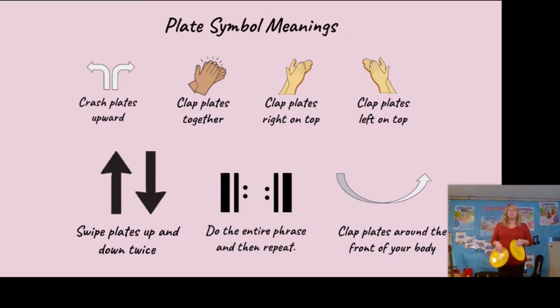Whenever you see two lines and two dots, those are repeat signs. That means you're going to go through the entire phrase, then go back and do the entire phrase again from the very beginning to the very end. The last motion is that long arrow, which means we're going to be clapping our plates around the front of our bodies, either left to right or right to left depending on where we are in the music. Let's take a look at the A section on the next slide.